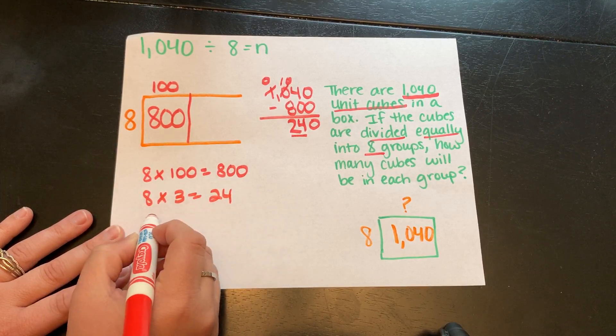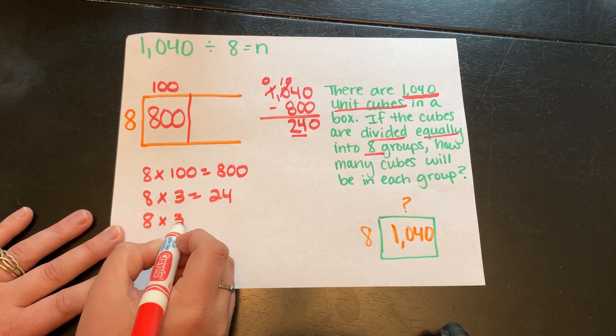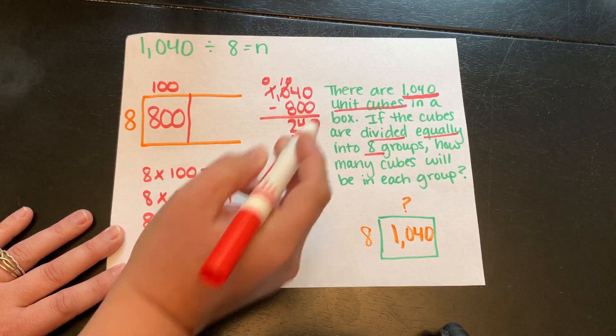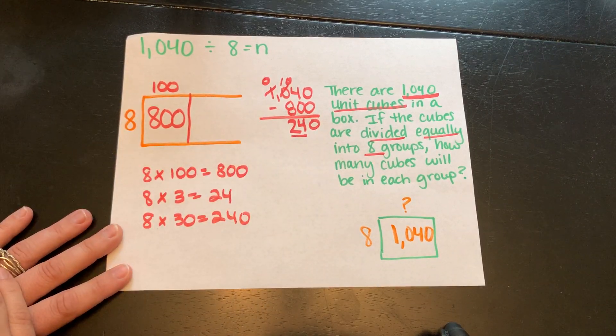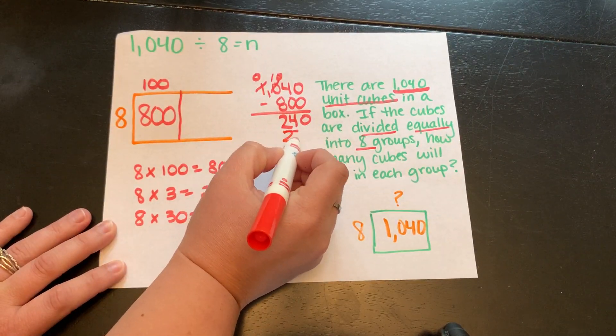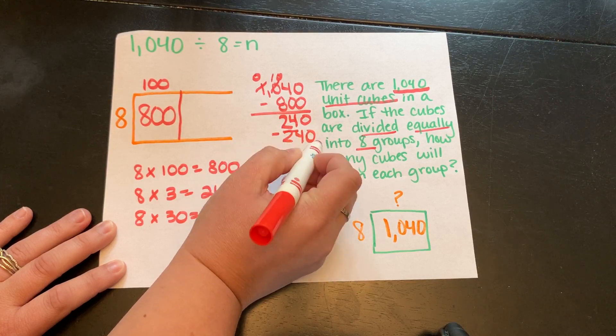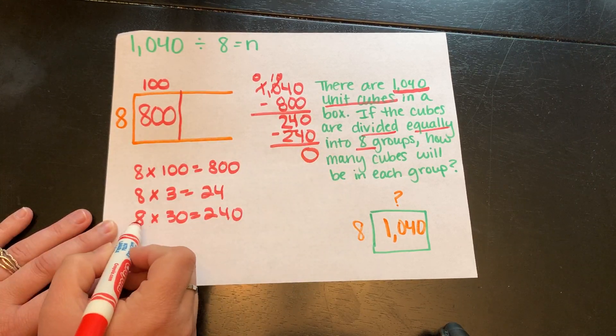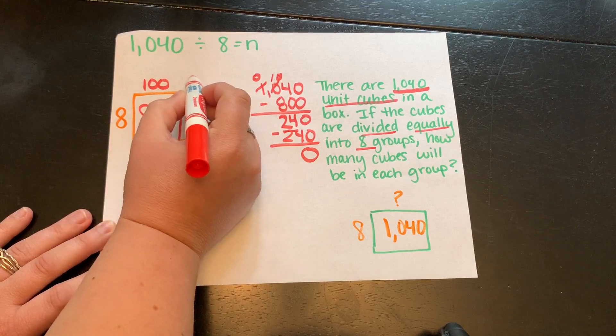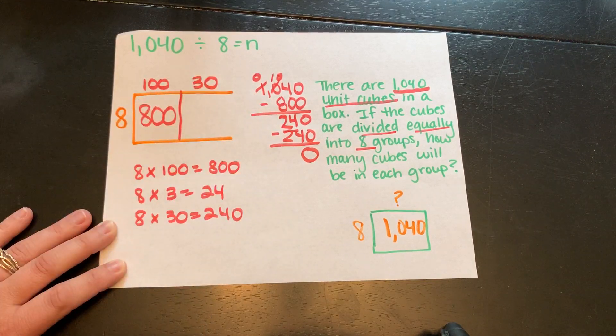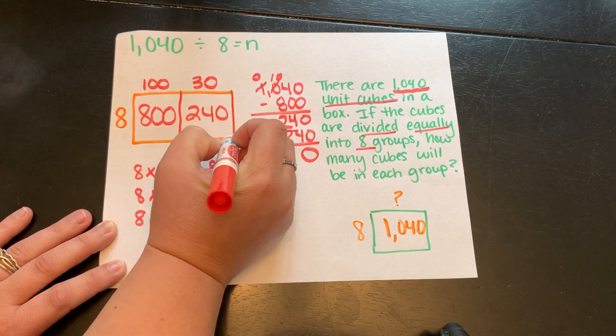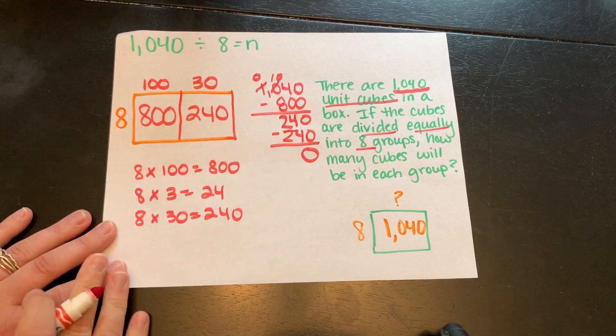I know 8 times 3 is 24. Thinking of powers of 10, if I did 8 times 30, it would be 240. And that's exactly what I need. So we're going to subtract 240. 240 minus 240 is 0. So what I did here is I did 8 times 30, writing my partial quotient on top, equals 240.